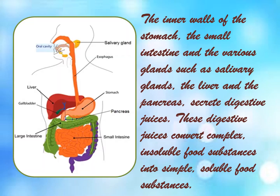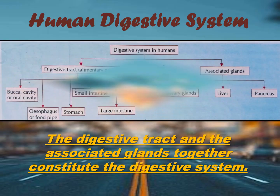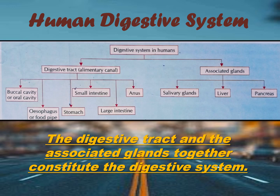The inner walls of the stomach, the small intestine, and the various glands such as salivary glands, the liver, and the pancreas secrete digestive juices. These digestive juices convert complex, chemical, insoluble food substances into simple, soluble food substances.